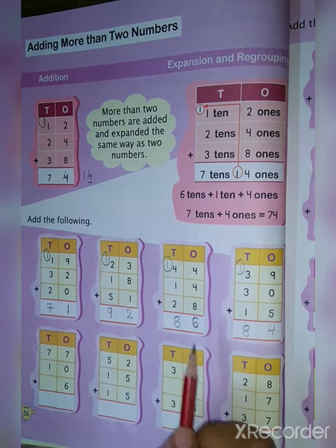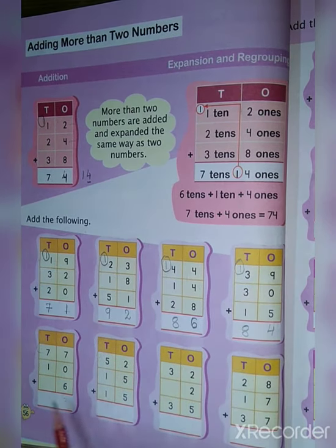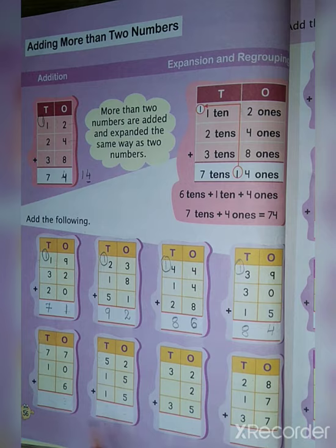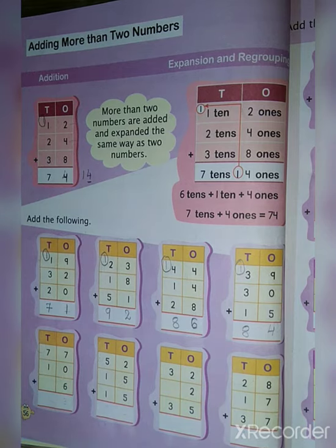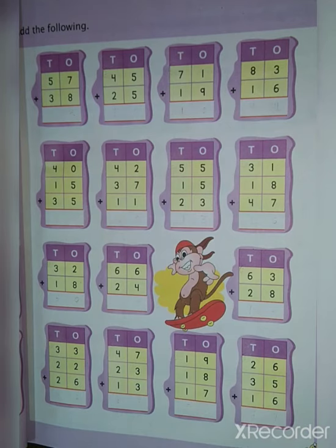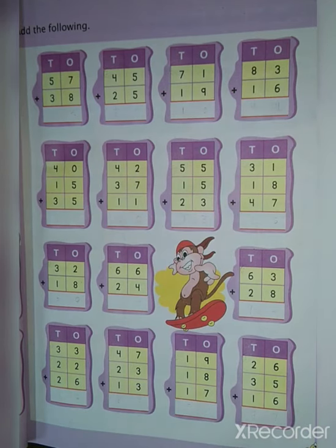I hope you all understood. These 4 sums you have to do in your own way. Now add the following on page number 57.